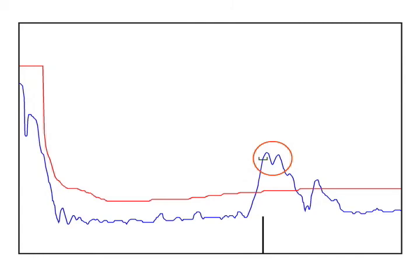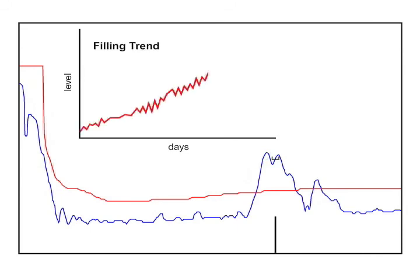This monster creates problems when the sensor is trying to select the correct echo. Sometimes it will pick the first echo. Sometimes it will select the second echo. If you were to look at these echoes over time, say for example on a filling trend graph, you would see something like this. Your customer would be asking, If we fill the vessel at a constant rate, why do we see such an ugly trend and how do we fix it?